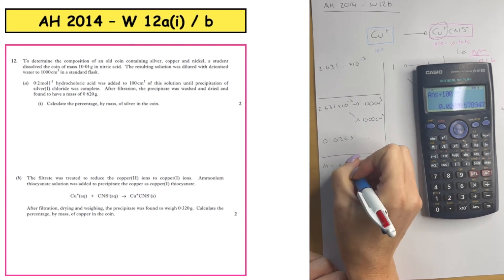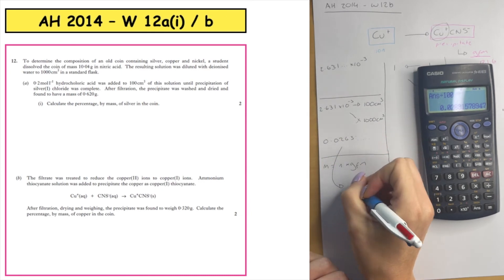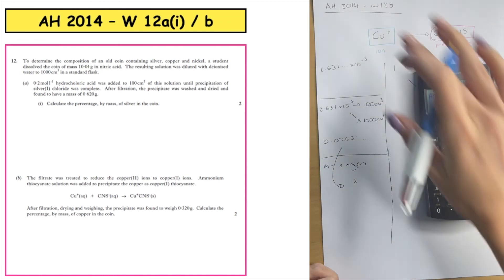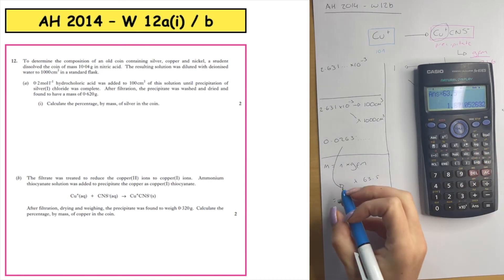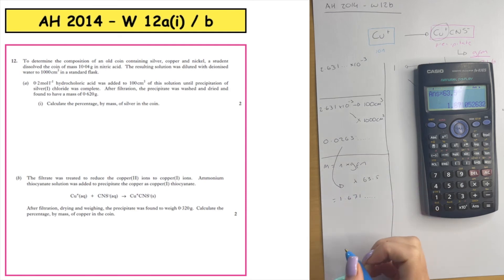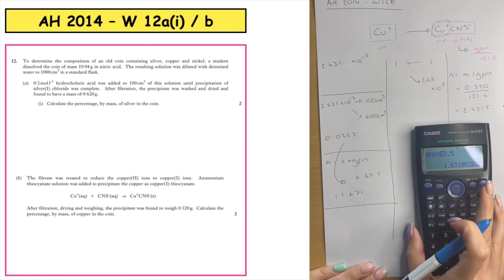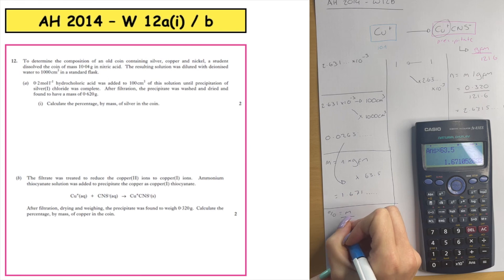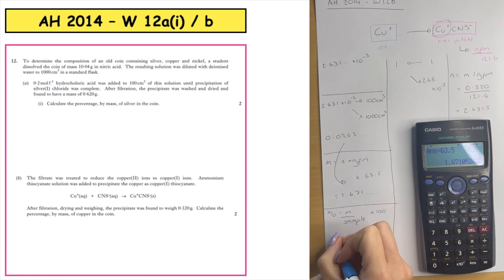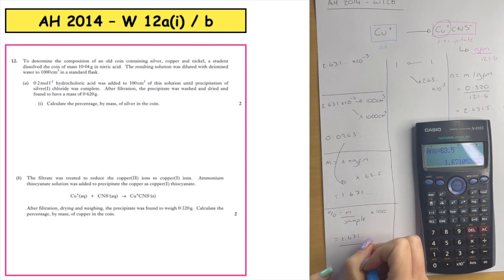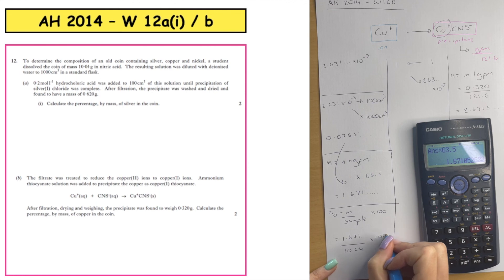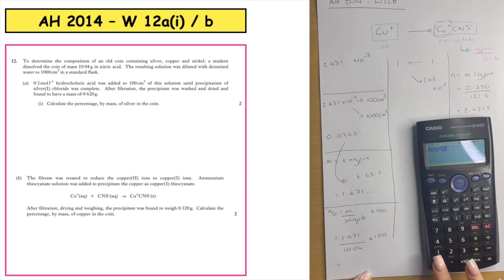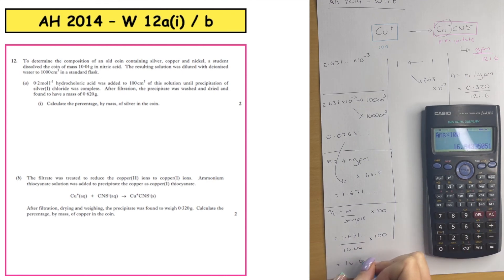We want to work out mass: mass = number of moles × GFM. Carrying through the moles and multiplying by the GFM of copper — checking the data booklet, that is 63.5 — gives a mass of 1.671 g. For the percentage by mass: percentage = (mass ÷ sample mass) × 100. The sample mass is the same as before, 10.04 g, because it's all from the original coin. Dividing by 10.04 and multiplying by 100 gives 16.64%.